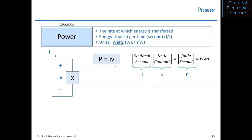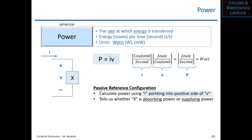That equation doesn't yet tell you whether X is supplying power like a battery or absorbing power like a light bulb. Conservation of energy says that power has to go somewhere. From the circuit's perspective, that power is absorbed or supplied. That's where we enter the passive reference configuration. You're going to hear me say passive reference configuration just about every time I mention a calculation of power in this class.